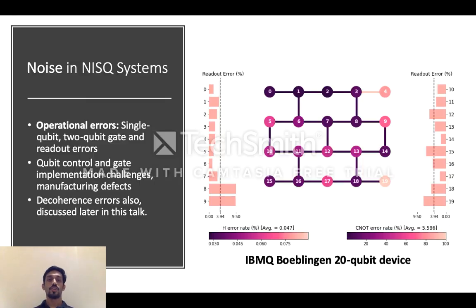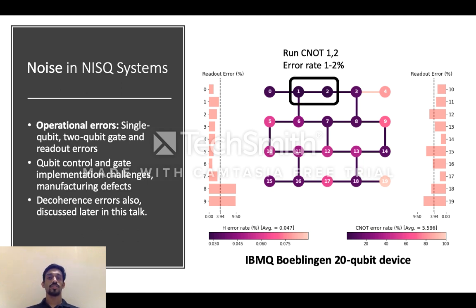Before we get into crosstalk and what it means, I'll give a brief background on noise in NISQ systems. Here we show the layout of qubits in IBM's 20-qubit system. The qubits are the circles and the edges show two-qubit operations that we can perform in the system. For example, I can execute a controlled NOT gate, a CNOT gate, on qubits 1 and 2.